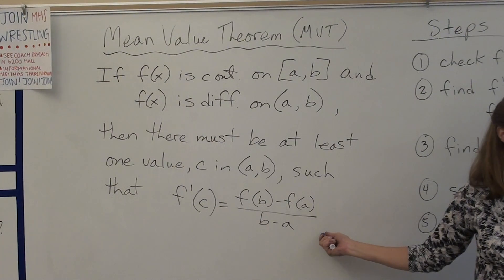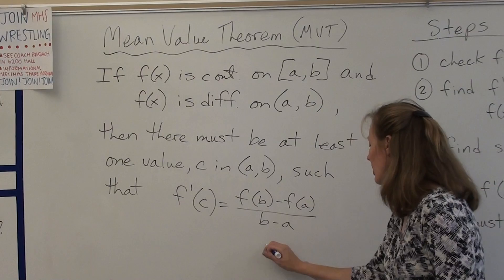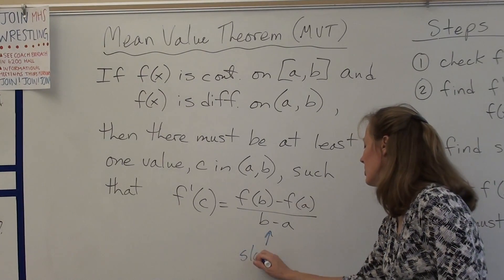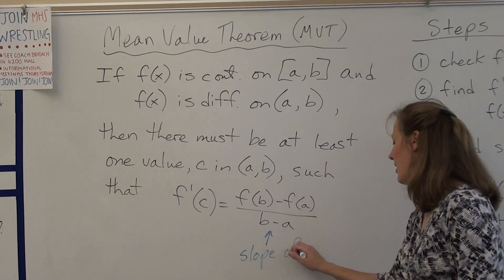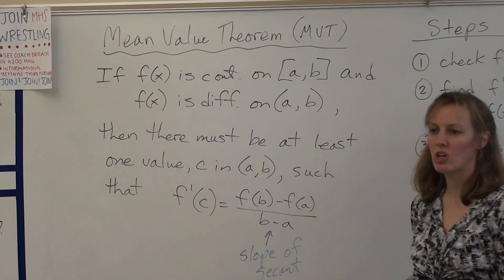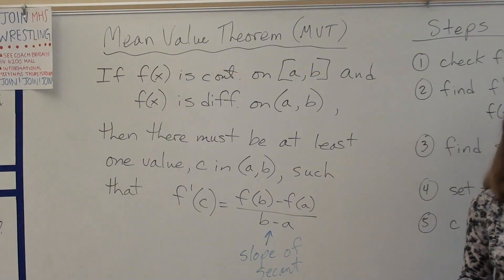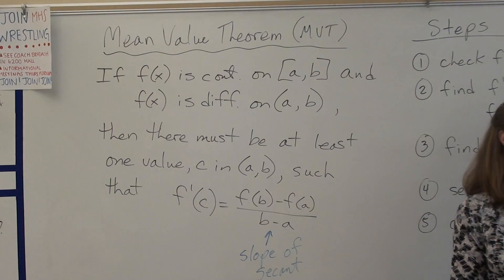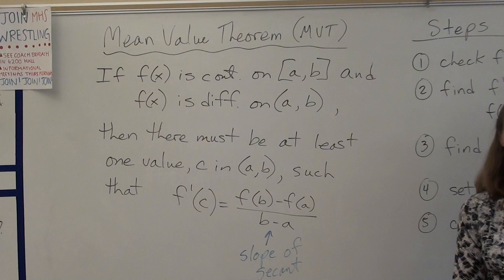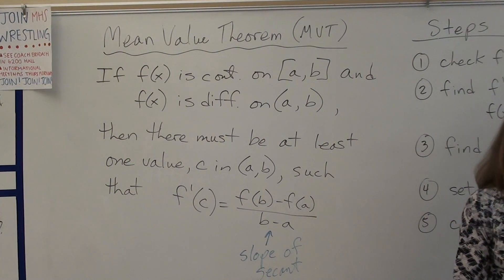Now, f(b) - f(a) over b - a might look a little familiar. It's an average rate of change. That's exactly right. This is an average rate of change, or in other words, this is slope of the secant. The slope of the secant line that connects the endpoints.